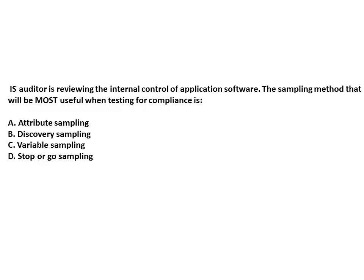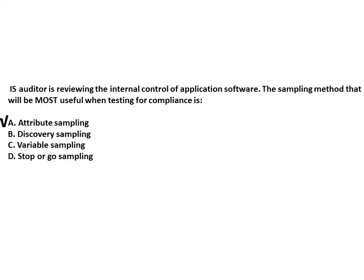Second question: an IS auditor is reviewing internal controls of application software. The sampling method most useful when testing for compliance is attribute sampling. Remember AC — attribute and compliance go together. Whenever attribute sampling is mentioned, the answer is compliance testing; whenever variable sampling is mentioned, the answer is substantive testing. So AC and VS.